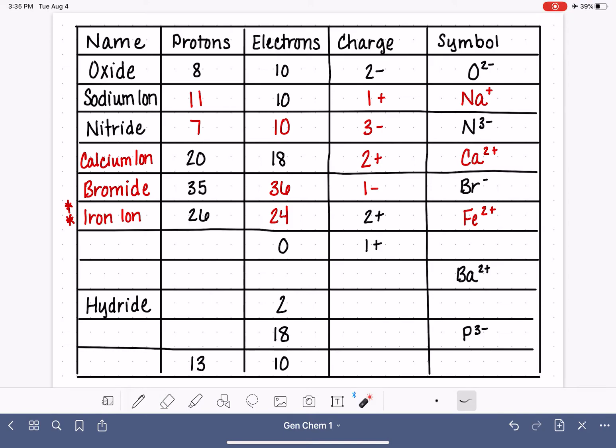Our next example, we have, whoa, we have 0 electrons and a plus 1 charge. This is crazy. 0 electrons with a plus 1 charge. So how many protons are there?